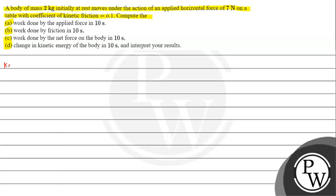As a key concept we need to understand the concept of work done. By definition, work done is the product of force and the displacement in the direction of force. To be precise, it can also be written as W = Fs cosθ. We need to remember this result — Fs cosθ — where θ is the angle between force and displacement. If θ is 0, work done comes out to be positive, and if θ is 180 degrees (oppositely directed), work done comes out to be negative.